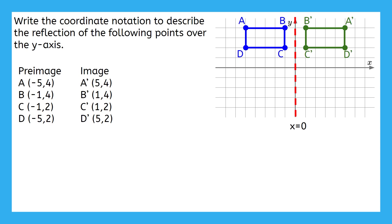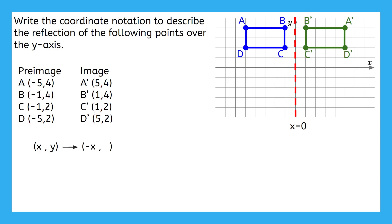Now that we know the pattern, we just have to use coordinate notation to write it. We know that we started with an x value and a y value for each of the points in our pre-image, so we write that as (x, y). Then we draw an arrow to write what happened to x and y. The x values changed signs, and we show that by writing negative x. Then we write what happened to our y values — they didn't change, so we just write y to show they stayed the same. This is the coordinate notation to describe a reflection over the y-axis.